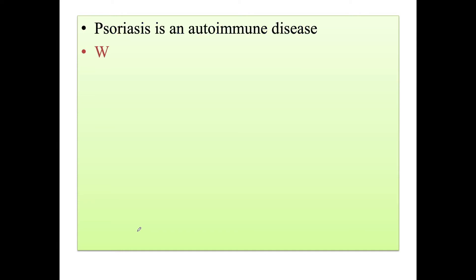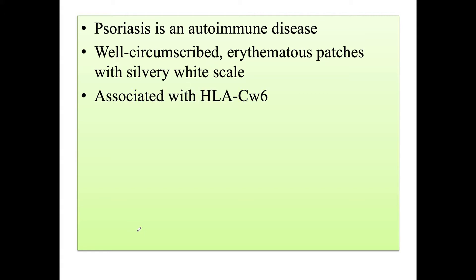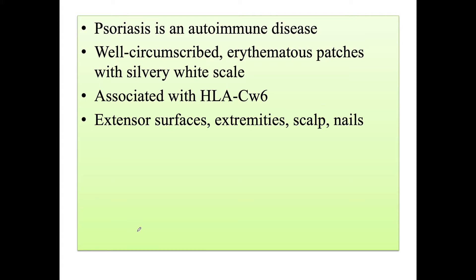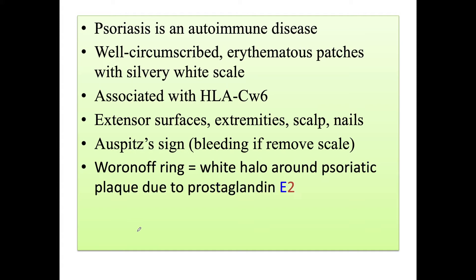Psoriasis is an autoimmune disease which presents with well-circumscribed erythematous patches with silvery white scales, associated with HLA-CW6. It involves extensor surfaces, extremities, scalp, and nails. In nails, it causes pitting and removal of nail from the skin. Auspitz sign is seen where we see bleeding if the scale is removed.